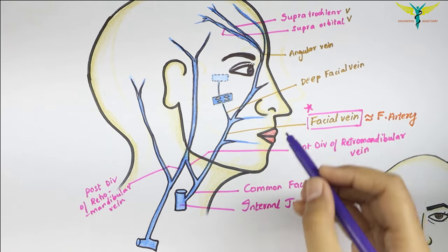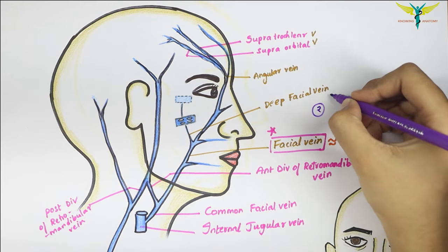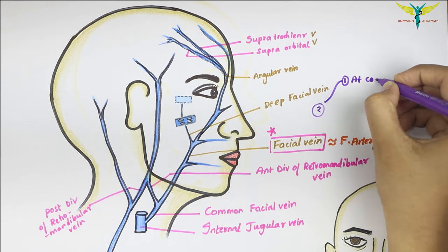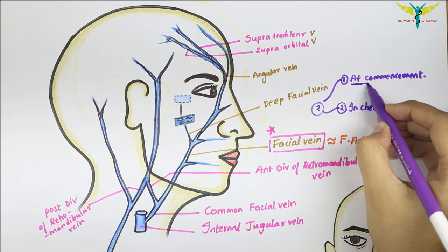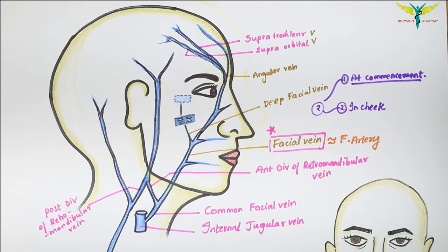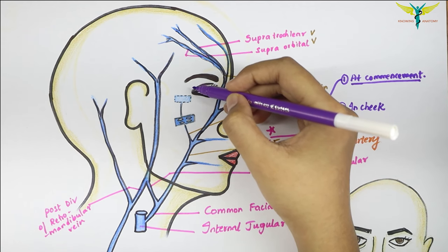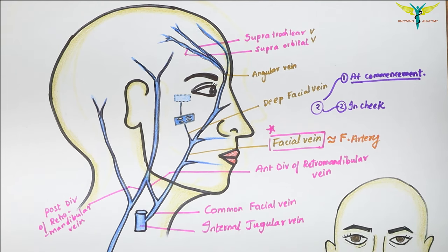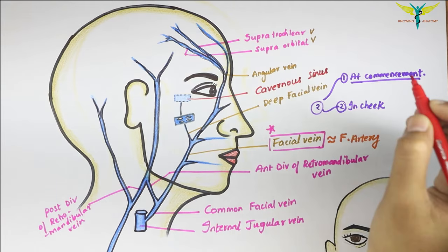The facial vein communicates with the cavernous sinus by two roots. The first root is at the commencement of the facial vein, where it communicates with the superior ophthalmic vein, which in turn drains into the cavernous sinus.